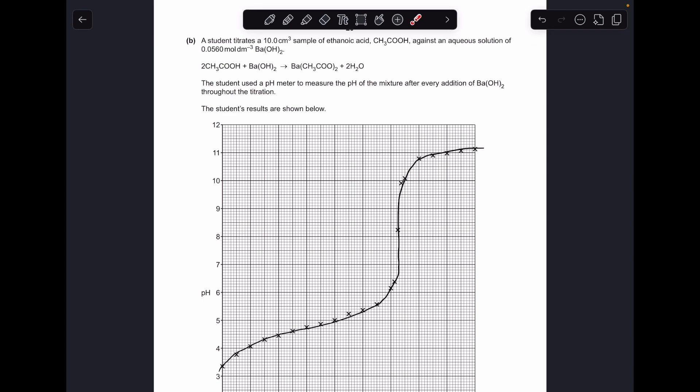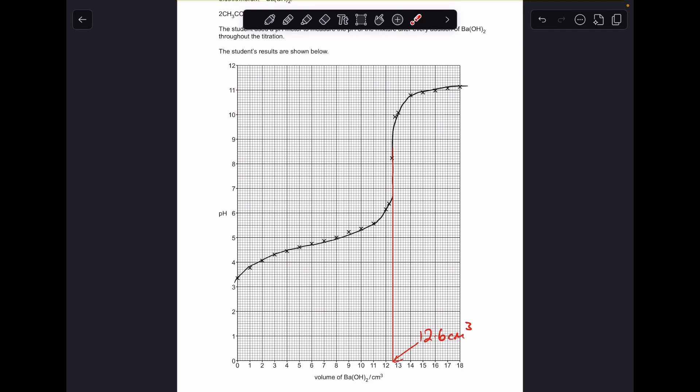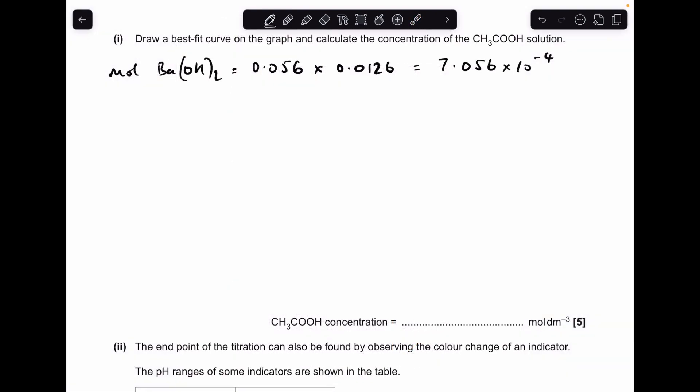And then we've got to use this curve to help us calculate the concentration of the ethanoic acid. So this is essentially just a straightforward titration question, but instead of being given the volume of the barium hydroxide we're getting it from the pH titration curve. So using my not fantastic curve, I'm getting a volume of 12.6 centimeters cubed. The range allowed in the mark scheme was 12.4 to 12.6, so I've just got it there.